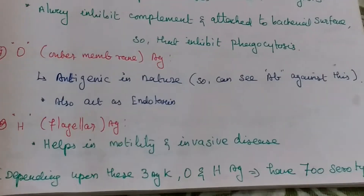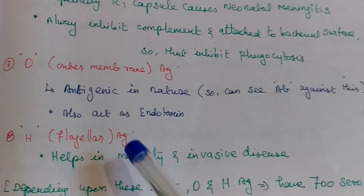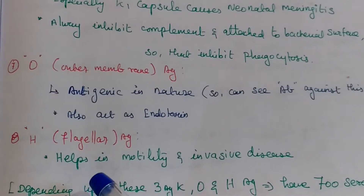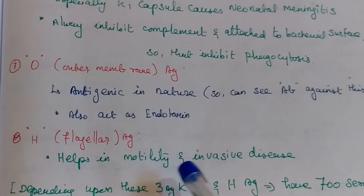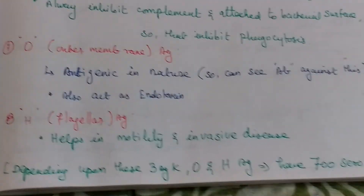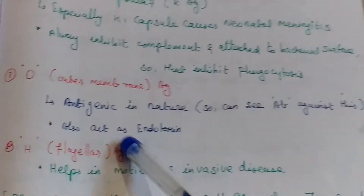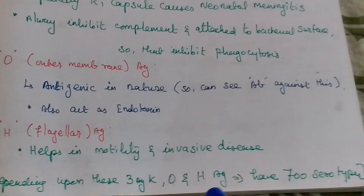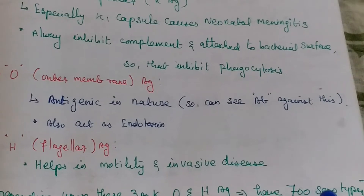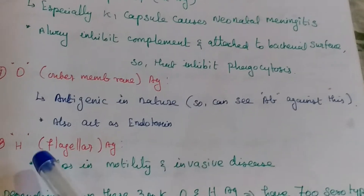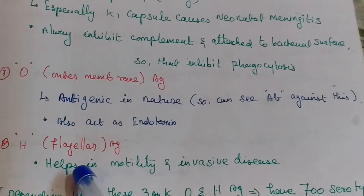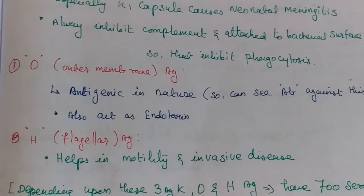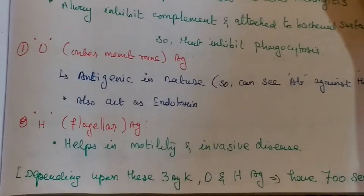The third antigen is the H antigen — the flagellar antigen. This helps with motility and invasive diseases. Depending upon these three antigens, E. coli has 700 serotypes.